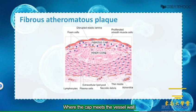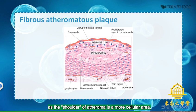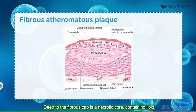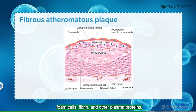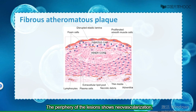Where the cap meets the vessel wall — the shoulder of the stroma — there is a more cellular area containing macrophages, T-cells, and smooth muscle cells. Deep to the fibrous cap is a necrotic core containing lipids, primarily cholesterol crystals, necrotic debris, foam cells, fibrin, and other plasma proteins. The periphery of the lesion shows neovascularization — proliferating small blood vessels.